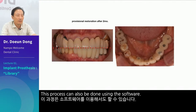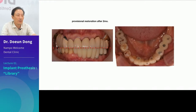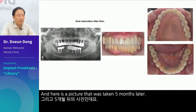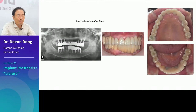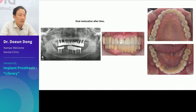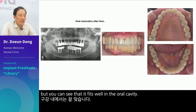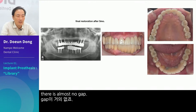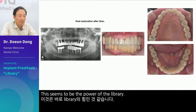Here is a picture taken five months later. The panorama is taken with the head slightly tilted, so it is a little slanted. But you can see that it fits well in the oral cavity. If you look at the margins that go into the sub on the panorama, there is almost no gap. This seems to be the power of the library — you can achieve perfect margins using a library.